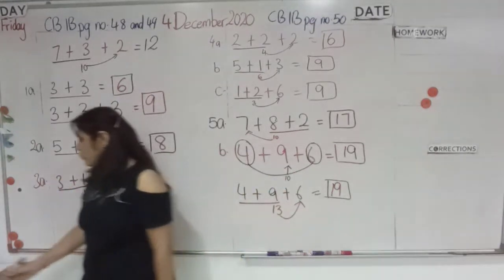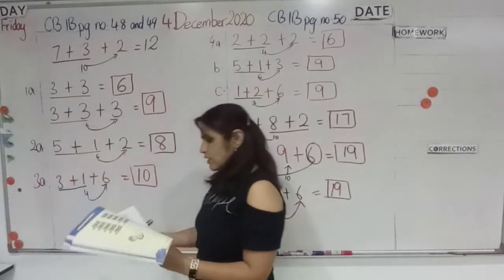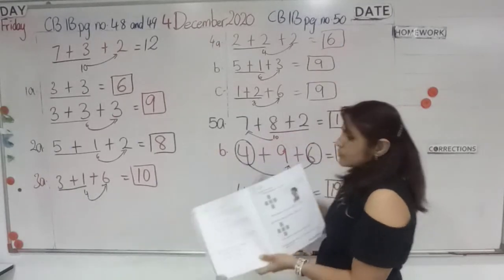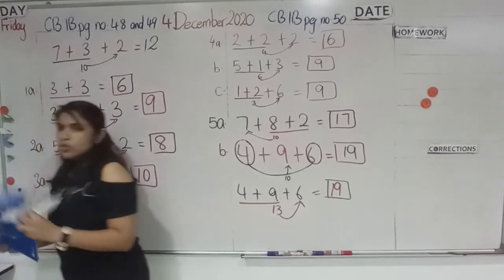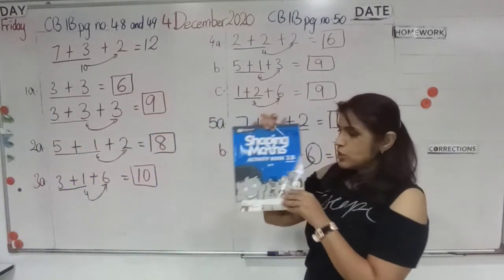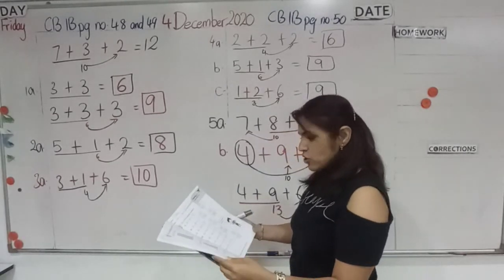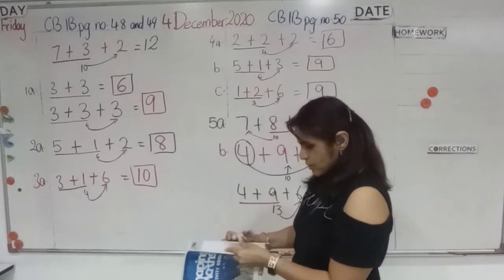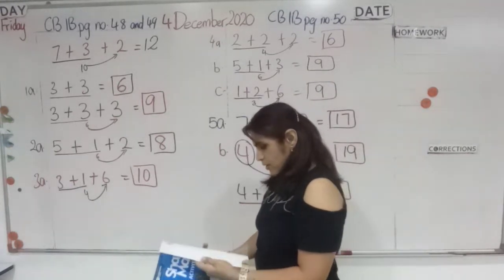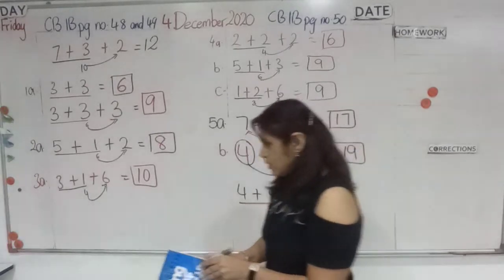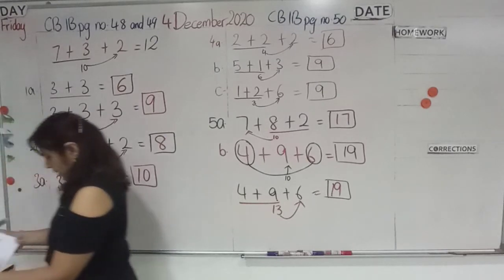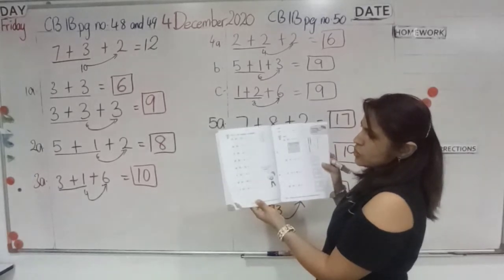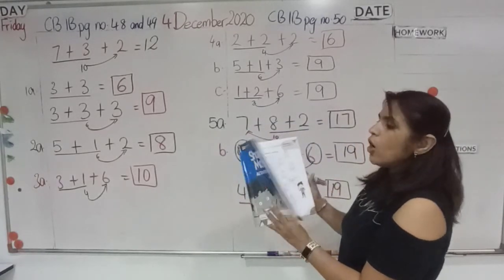So, this is for your classwork. We have done three pages. That is, page number 48, 49 and 50. For homework, I would want you to do in your Shaping Math Activity Book 1B, you will be doing page number 45 and 46. Page number 45 and 46 for homework.